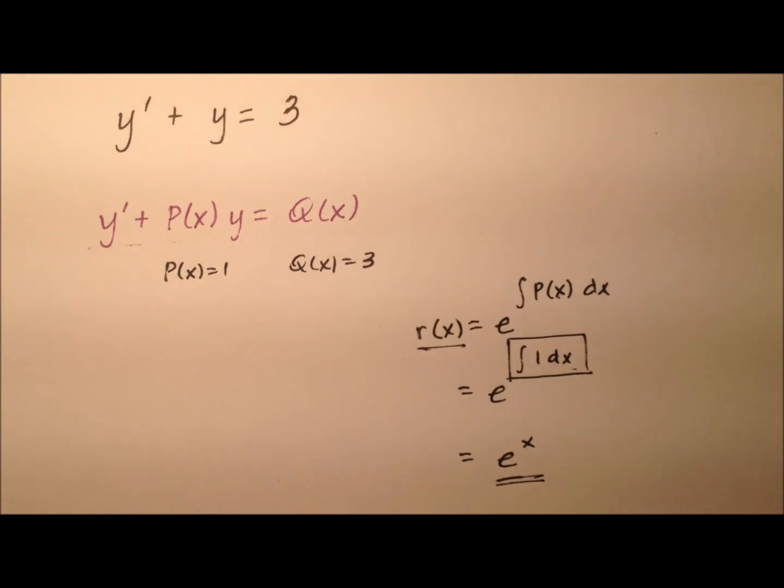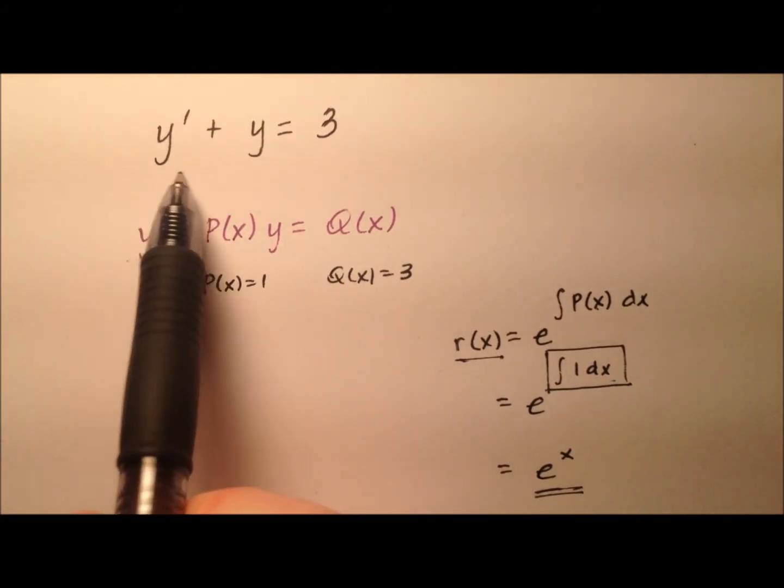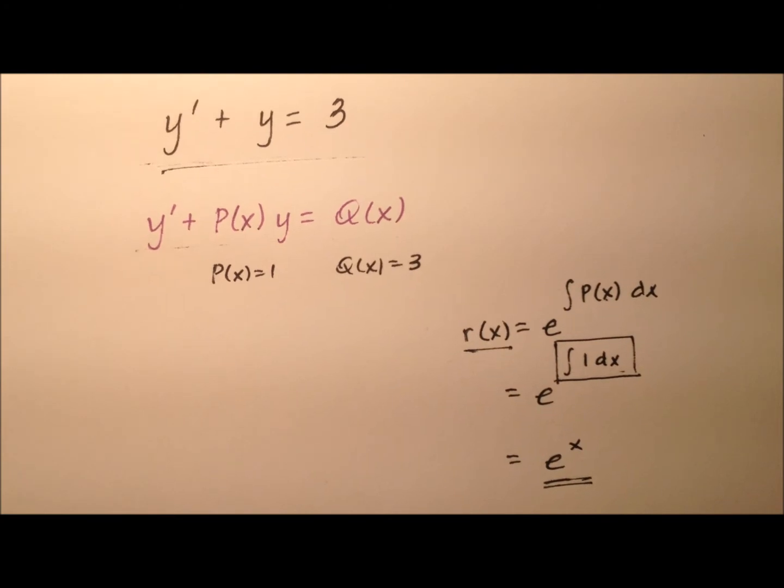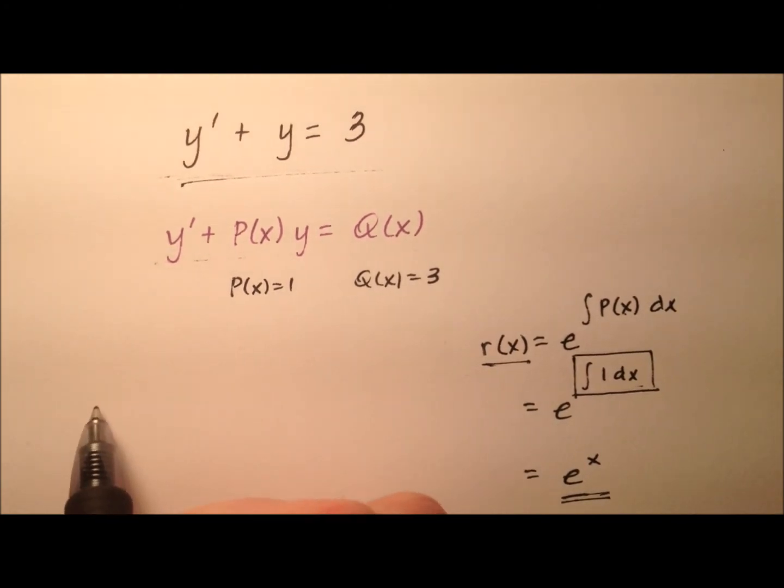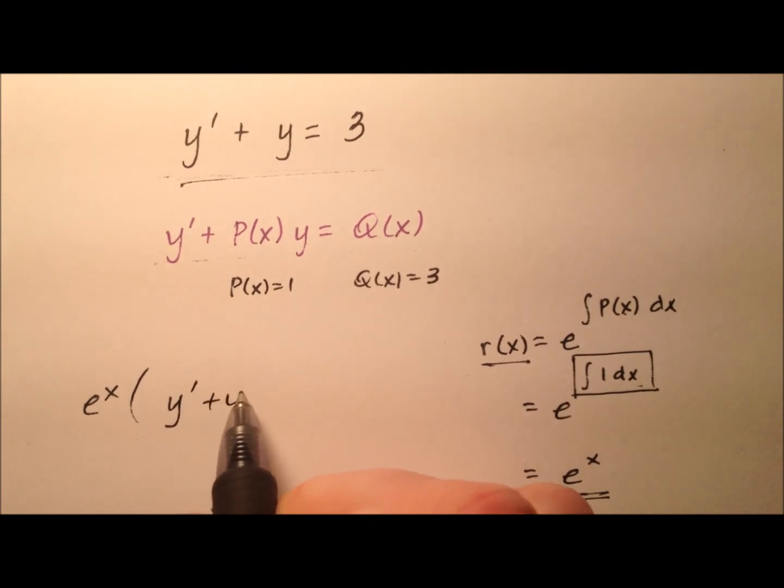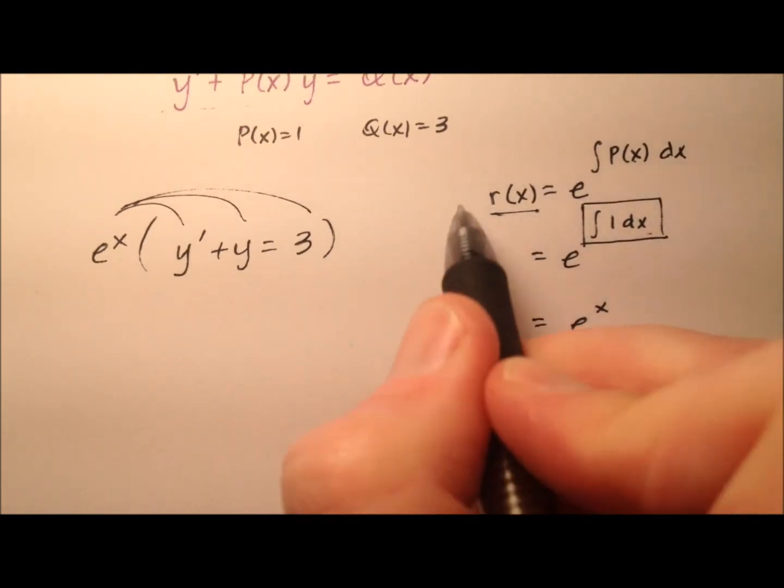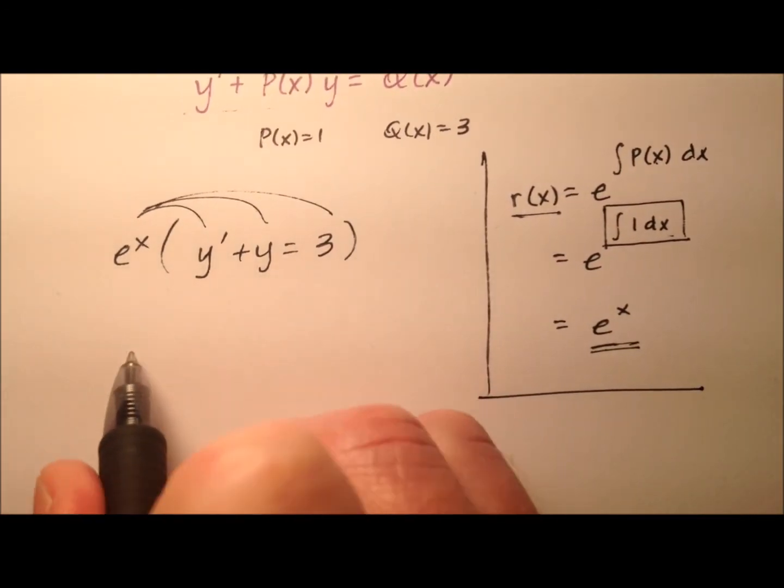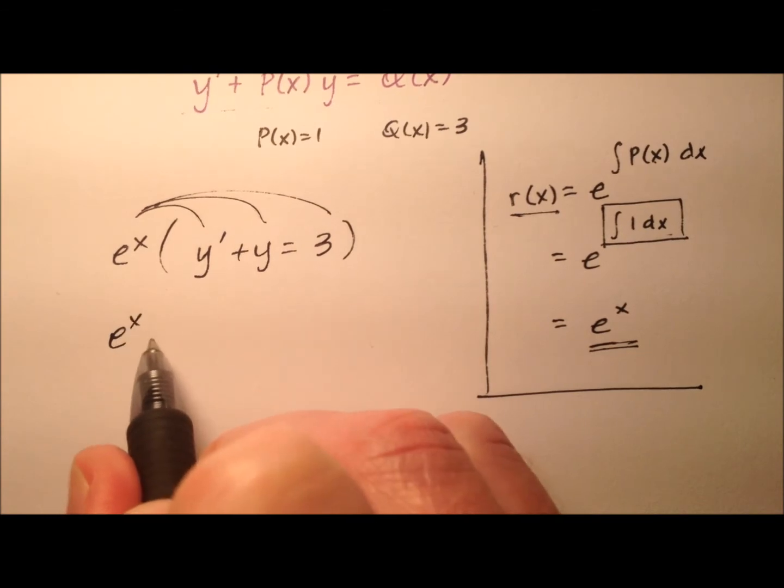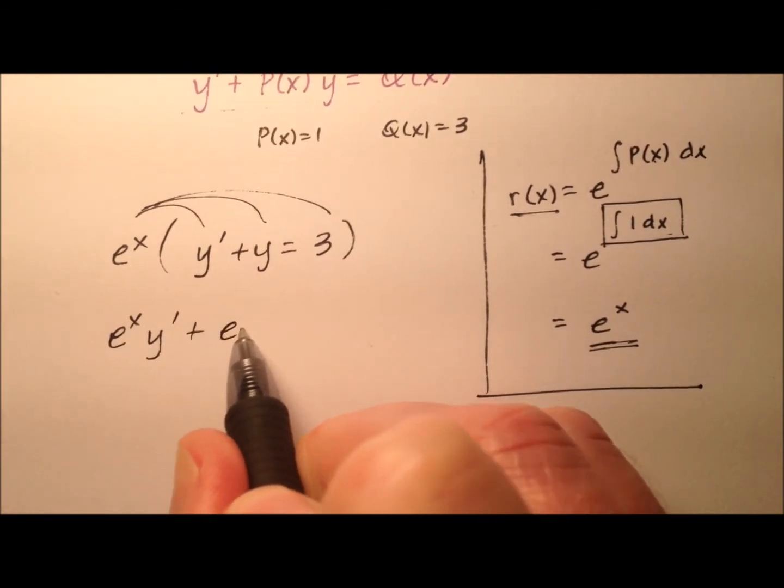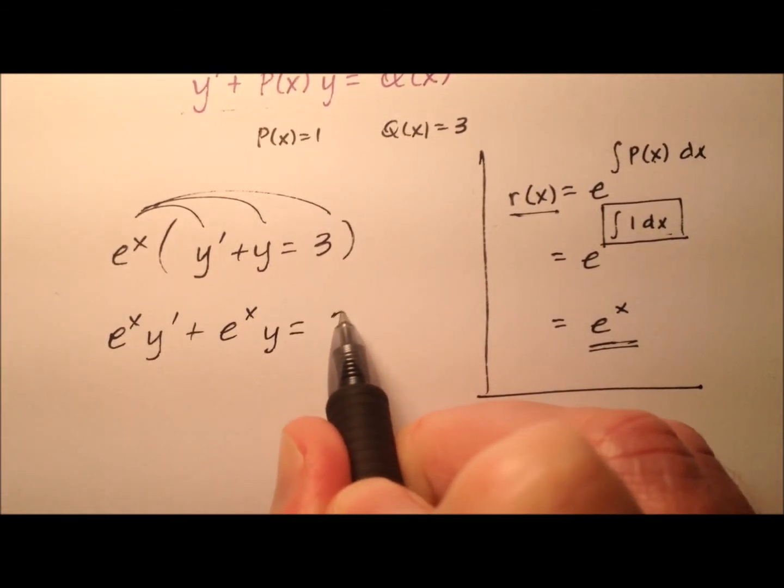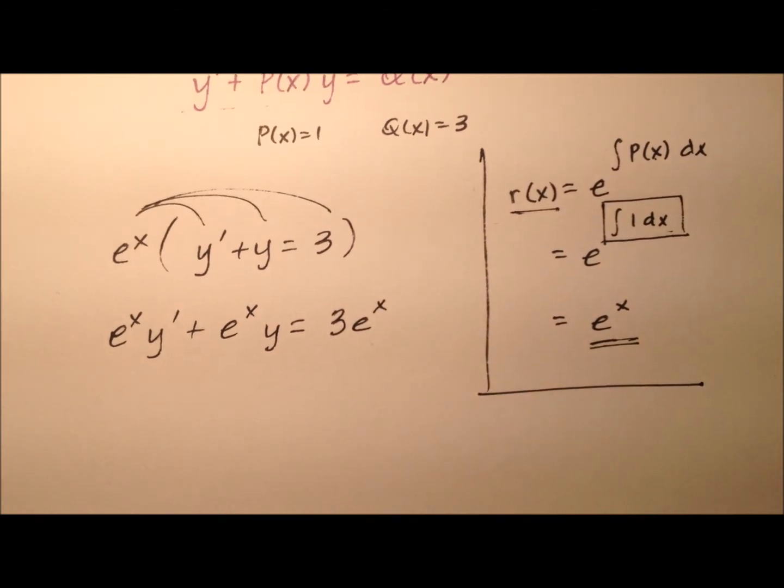What are we going to do with this e to the x? We're going to multiply it through this equation on both sides. So every single term is going to get an e to the x. This ends up being e to the x y prime plus e to the x y equals 3e to the x.